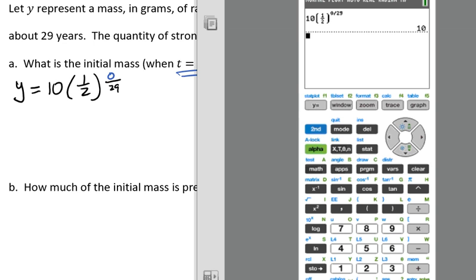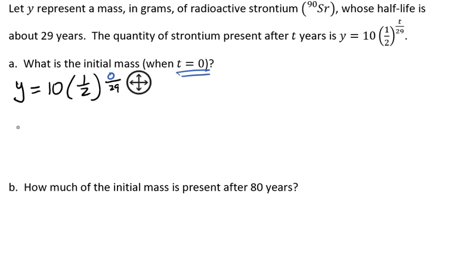One-half raised to the 0 divided by 29. And that's going to give us an answer of 10. So we have y equals 10, and the initial mass is 10 grams.